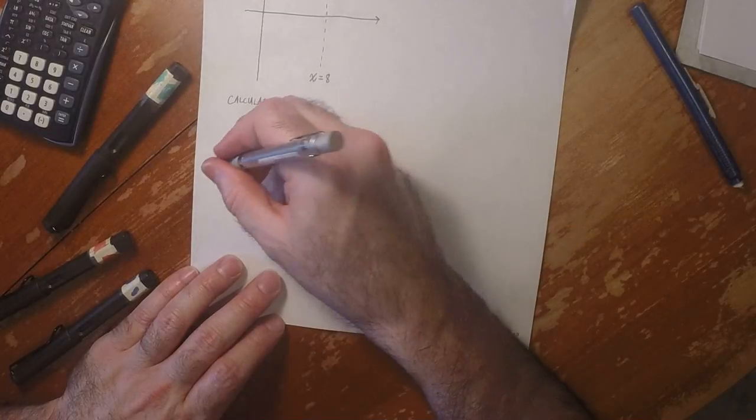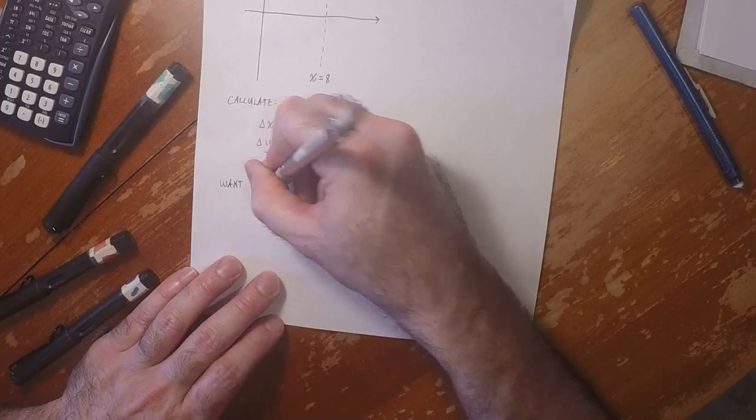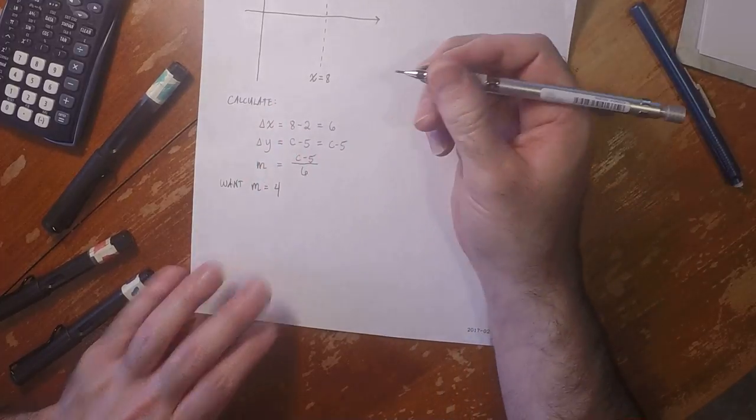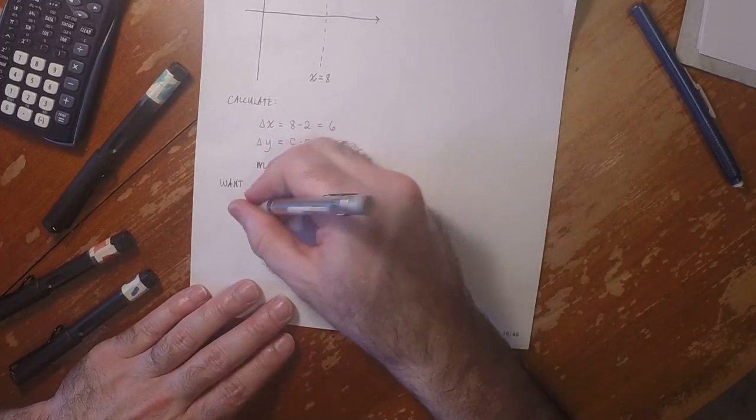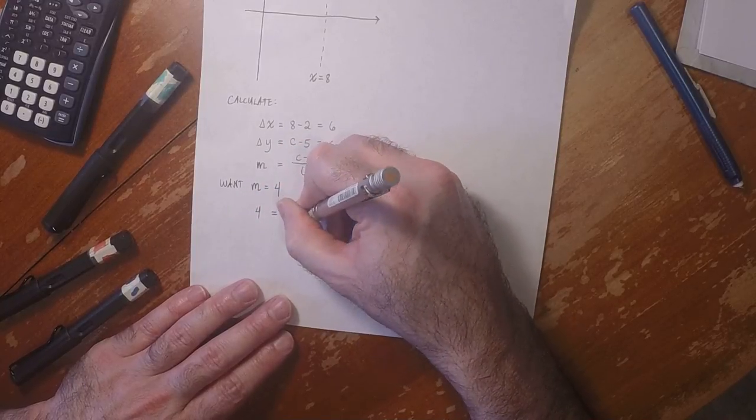And now what we want is m equal to 4. So 4 is equal to (c minus 5) over 6.